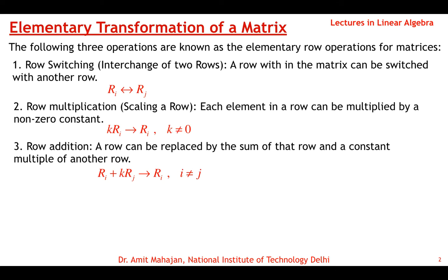The third operation is row addition. A row can be replaced by the sum of that row and a constant multiple of another row. The i-th row is added to k times the j-th row, with impact on the i-th row, where i ≠ j. For example, apply R1 + 2×R2 and the impact is on R1 — the elements of R2 are multiplied by 2 and added to the corresponding elements of R1.